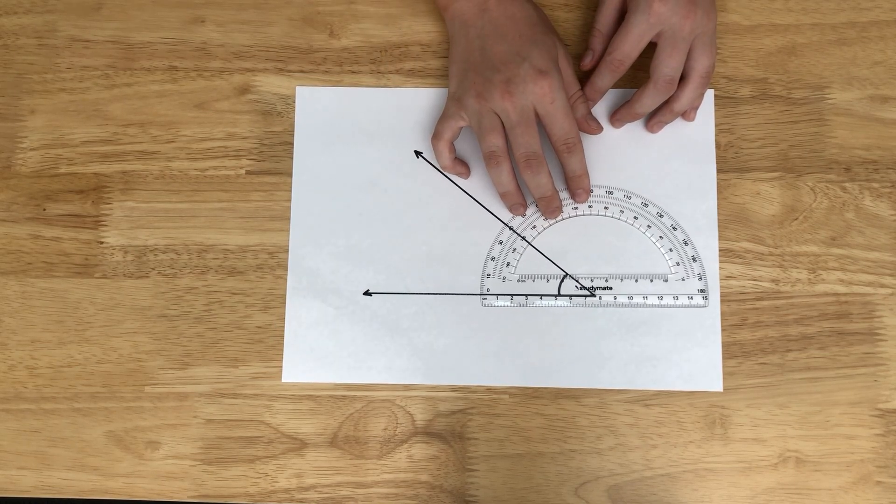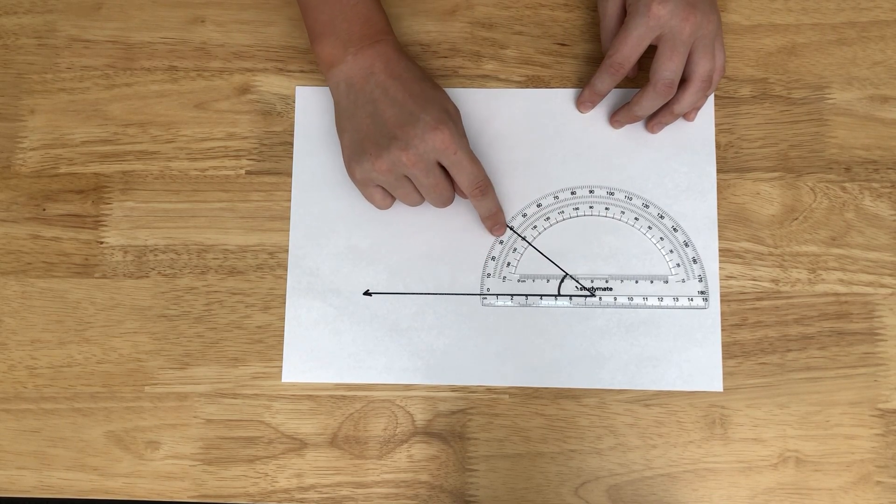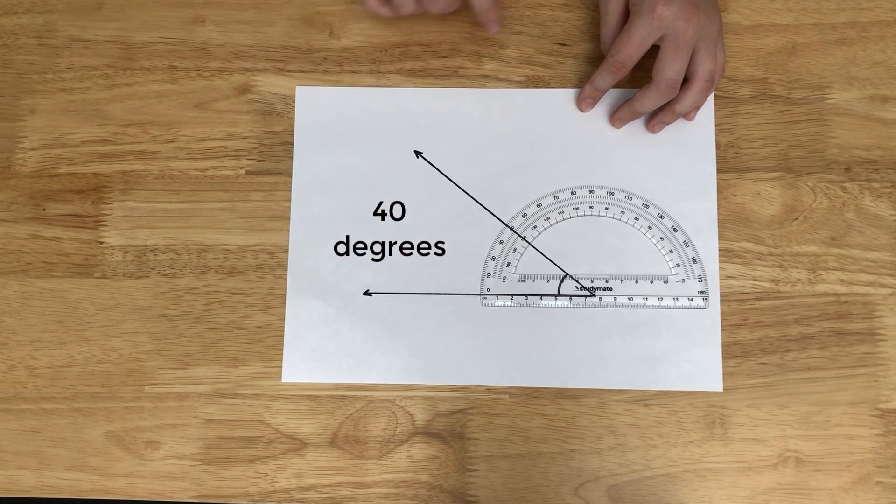So if we line that up, we can see that it's 40 degrees: 10, 20, 30, 40. It's 40 degrees.